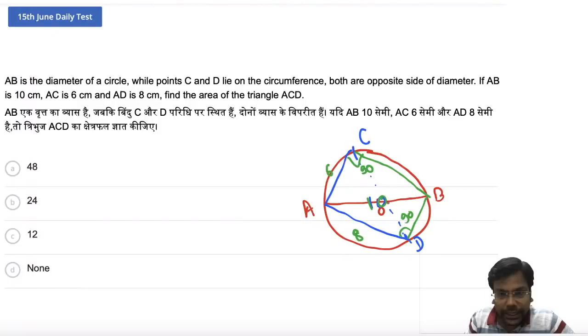You can see AB is 10, this is 6, obviously this is 8. So you can say triangle ACB and triangle ADB are congruent. Common chord, hypotenuse common, 90 degrees. So this is congruent.